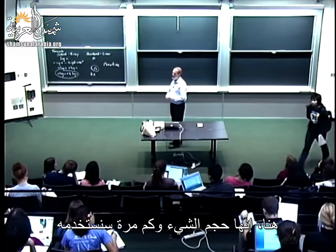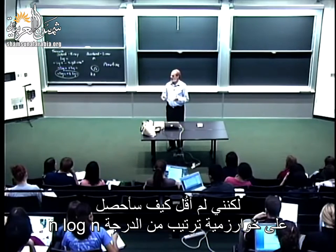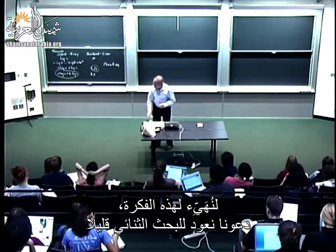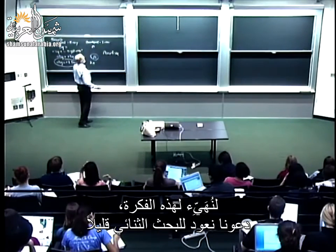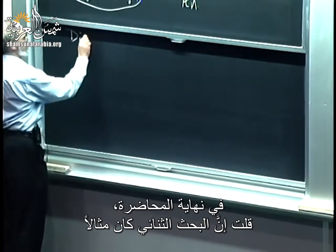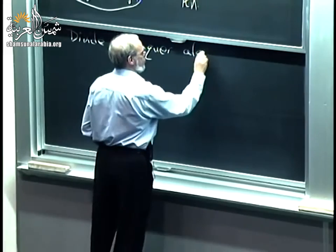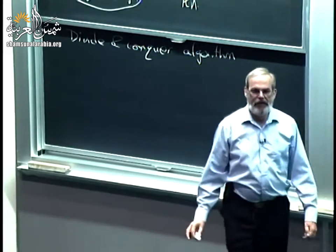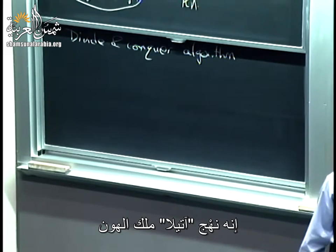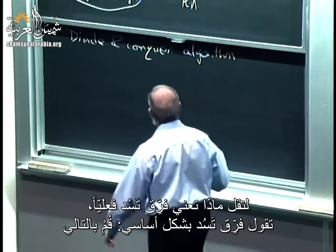We want to think carefully about what we're measuring when we talk about complexity — both the size of the thing and how often we're going to use it. I still haven't said how to get an n log n sorting algorithm, and that's what I want to do today. To set the stage, let's go back for a second to binary search. At the end of last lecture, I said binary search was an example of a divide and conquer algorithm.